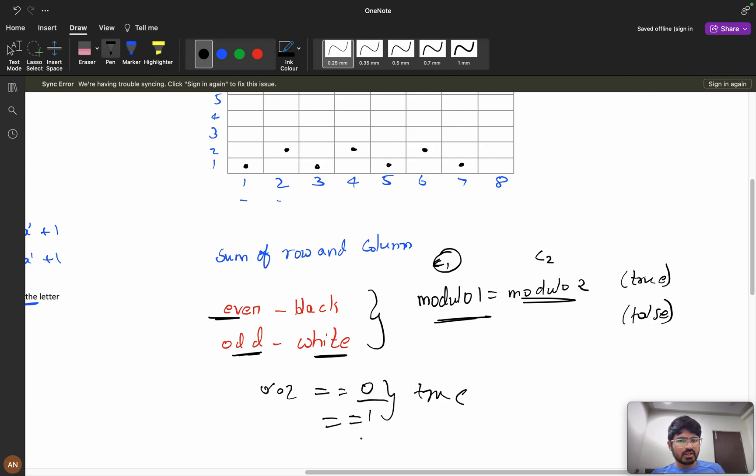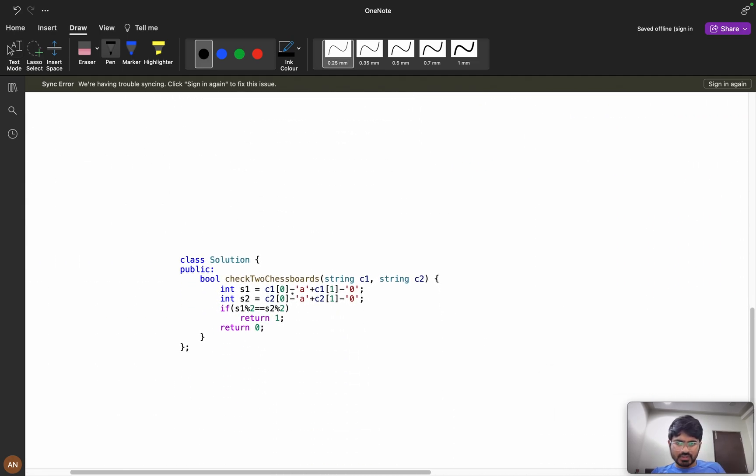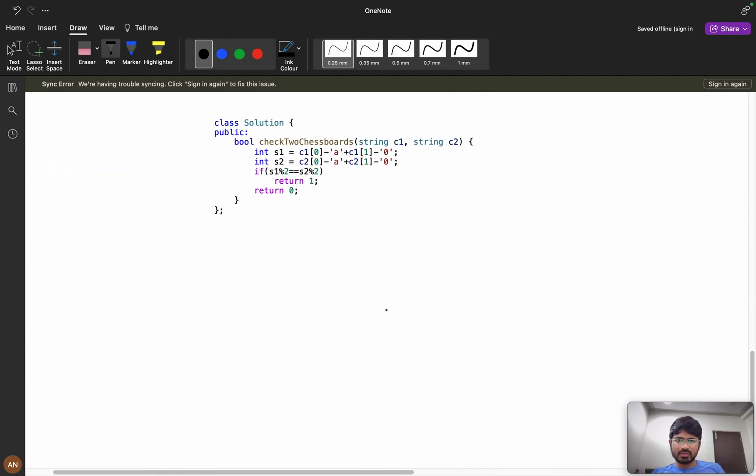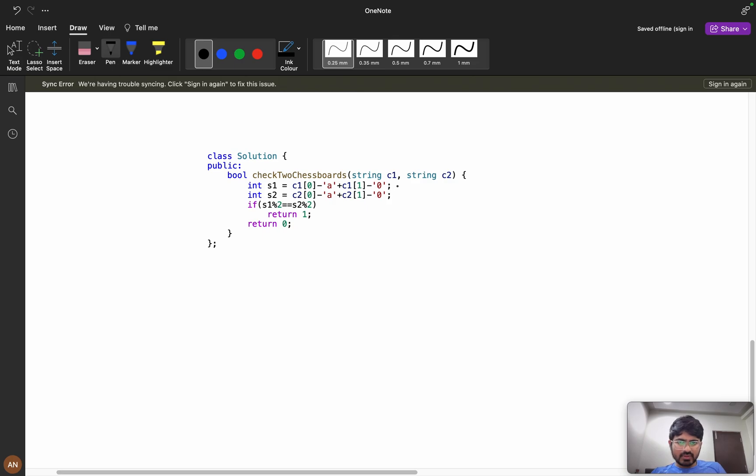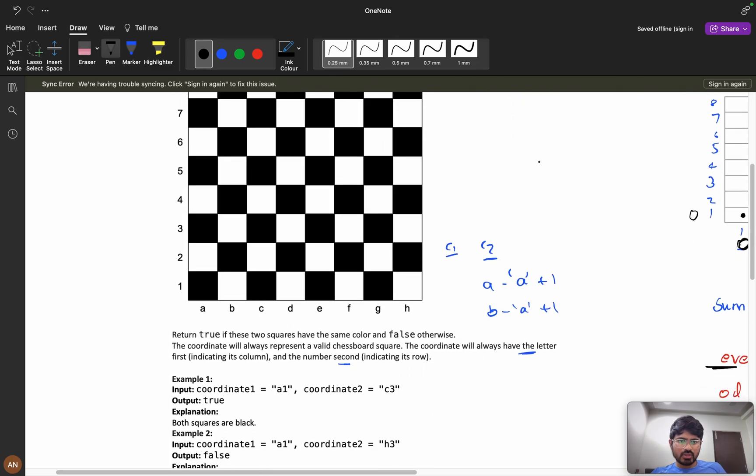Let's see the coding part. It's simple. What we will do is c1[0] minus 'a'. As we can see here, we are doing minus 'a', so we are representing with zeros: 0, 1, 2, 3, or anything we can start because it's a subtraction. Then we are doing c1[1] minus '0'. That means we will get the coordinate. If you are having '1' as my string and subtracting it from the ASCII value, like '1' minus '0', we will get the coordinate.